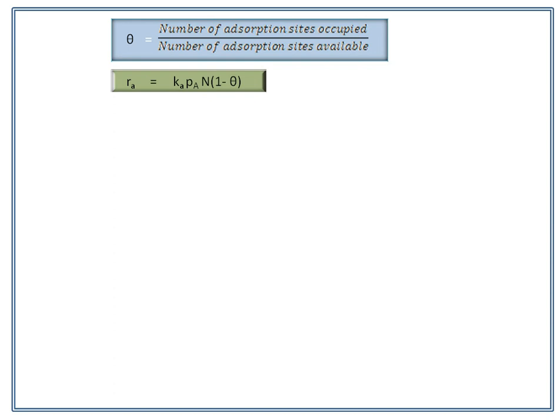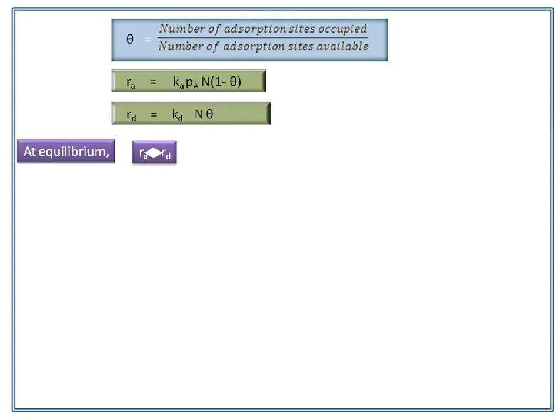Similarly, the rate of desorption Rd is directly proportional to the number of adsorbed molecules, which is N×θ. So Rd equals Kd × N × θ, where Kd is the rate constant for desorption. At equilibrium, the rate of adsorption equals the rate of desorption.